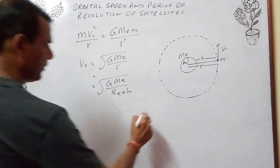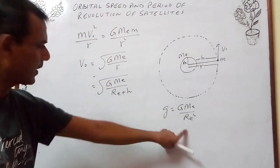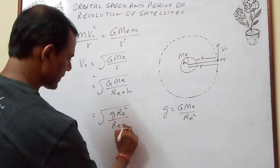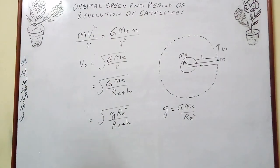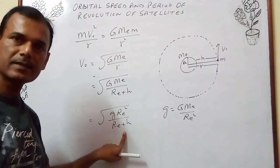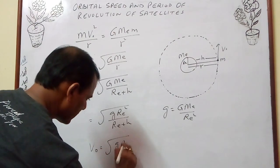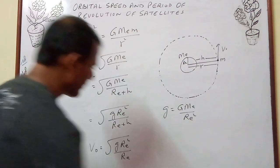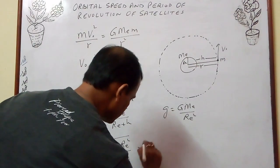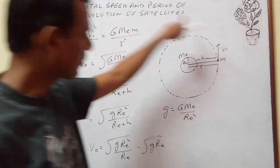In terms of small g, we know g equals G·Me/Re², so G·Me equals g·Re². Substituting, V0 equals the square root of g·Re² divided by (Re + h). For a satellite orbiting very near to the surface of earth, h is negligible compared to Re. Neglecting h, the formula becomes V0 equals the square root of g·Re. This is the formula for orbital speed of a satellite orbiting around the earth.